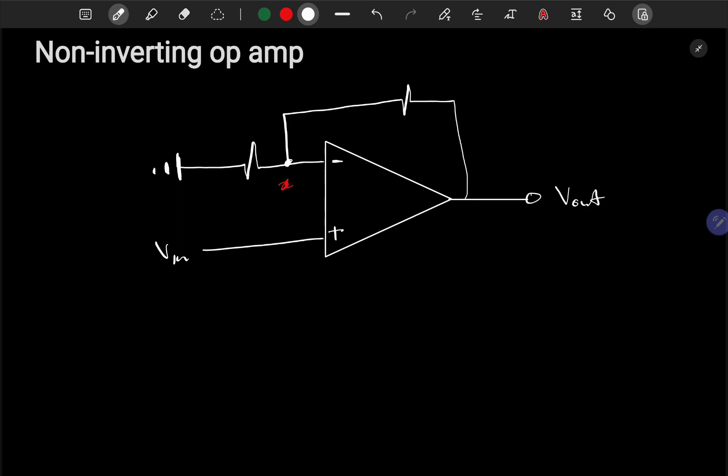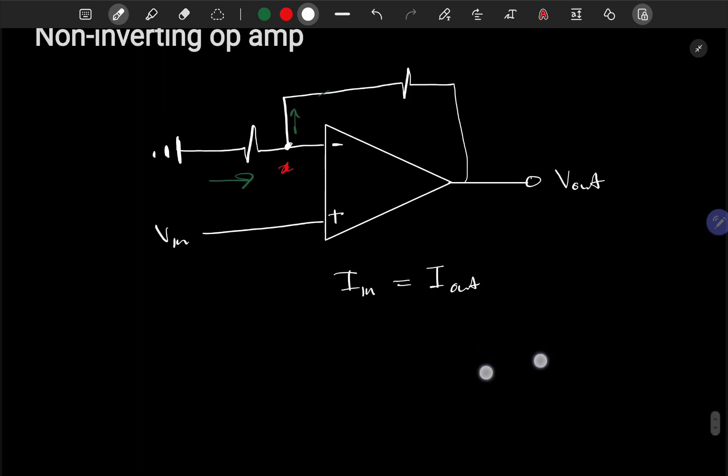Let's figure out what's happening here. The current going in here is the same as the current going out. There's no current into the op amp input because the resistance is approaching infinity. We call this virtual ground. So current in equals current out.